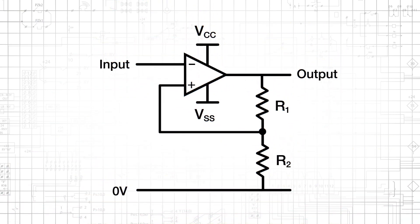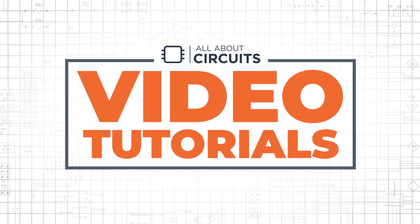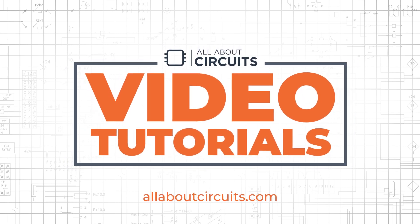One way we can create different negative-to-positive and positive-to-negative thresholds is by incorporating positive feedback as shown here. For more details, check out the link in the description or visit allaboutcircuits.com.